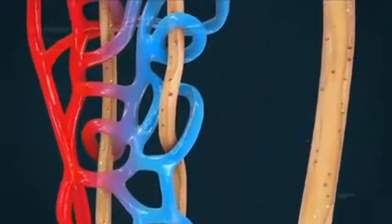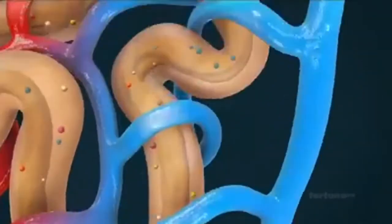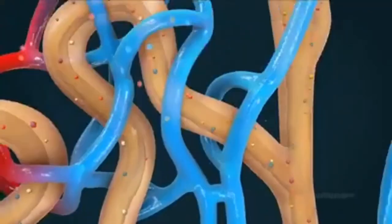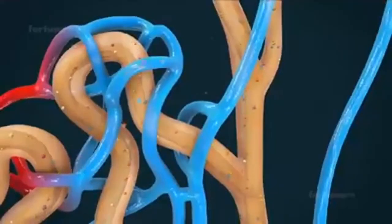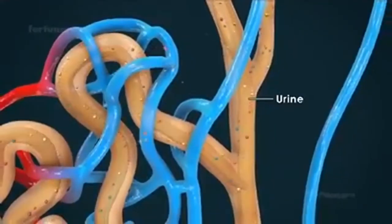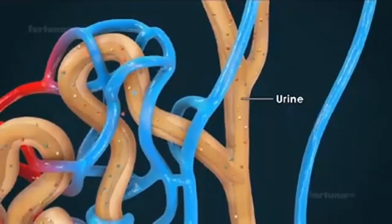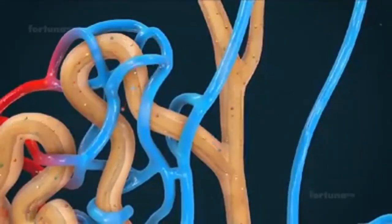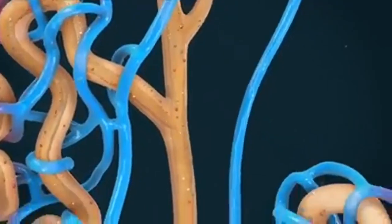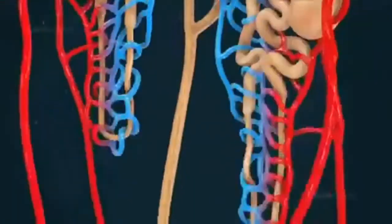The limbs of Henle's loop are permeable to ions, and the distal tubule will absorb certain ions. Urine, the resultant fluid once everything has been through the process of filtration and reabsorption, passes from the distal tubule and into the collecting ducts.